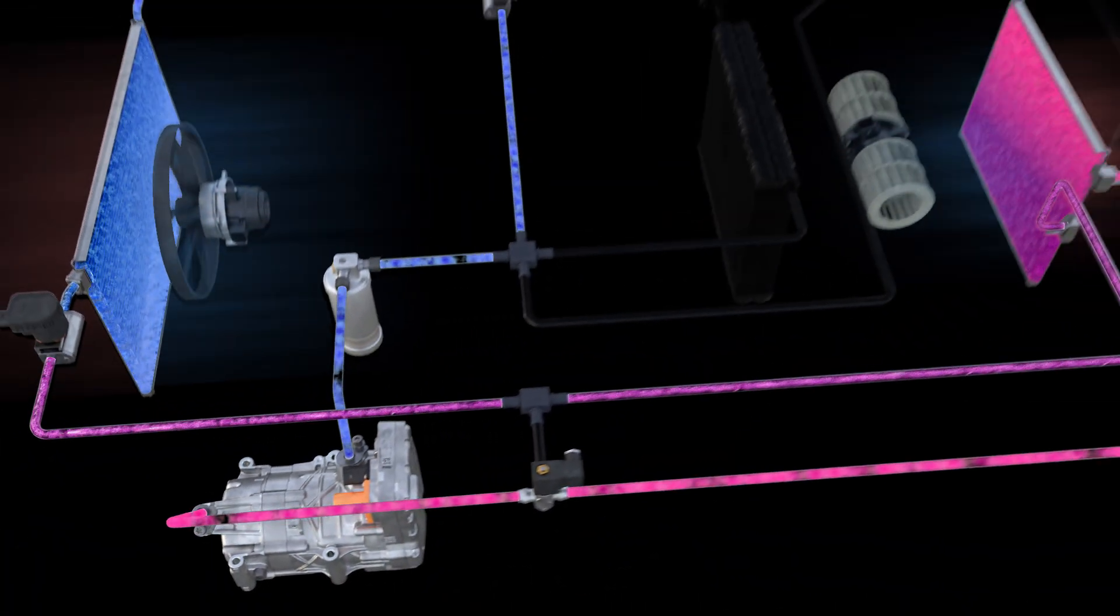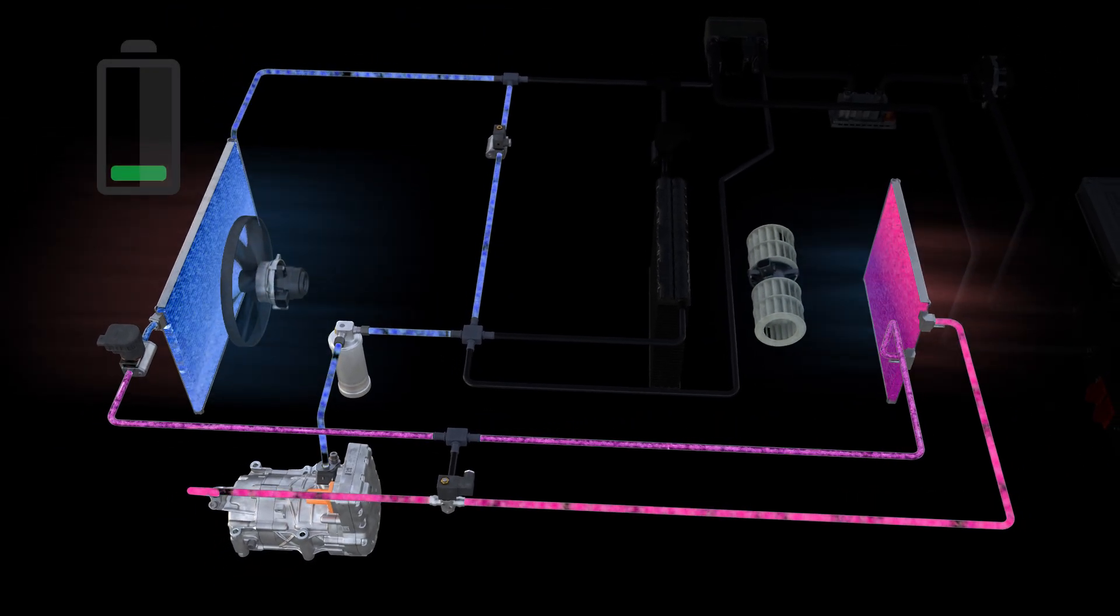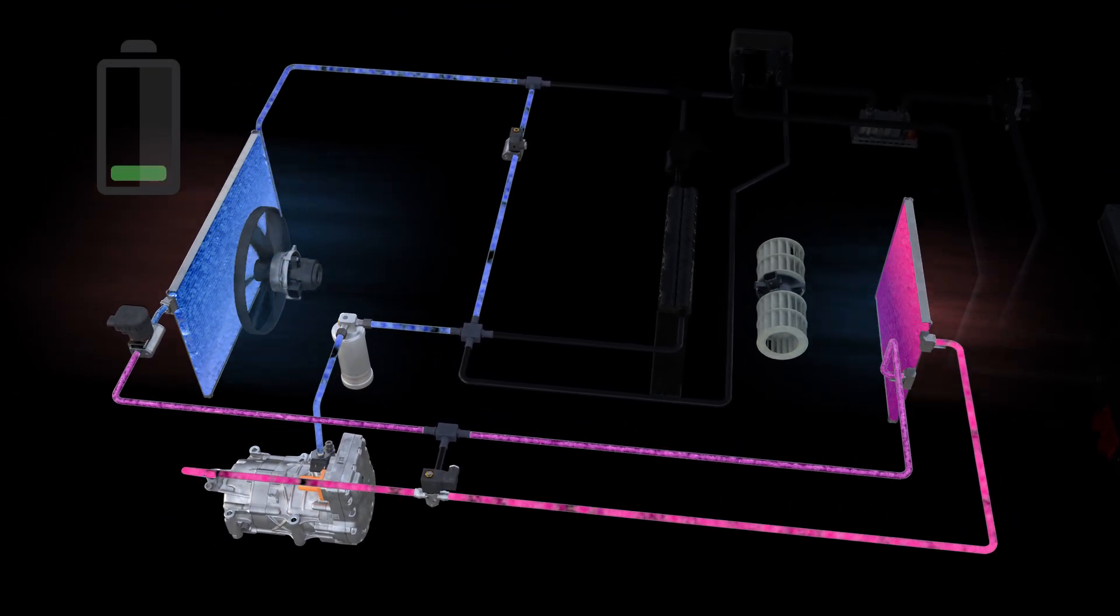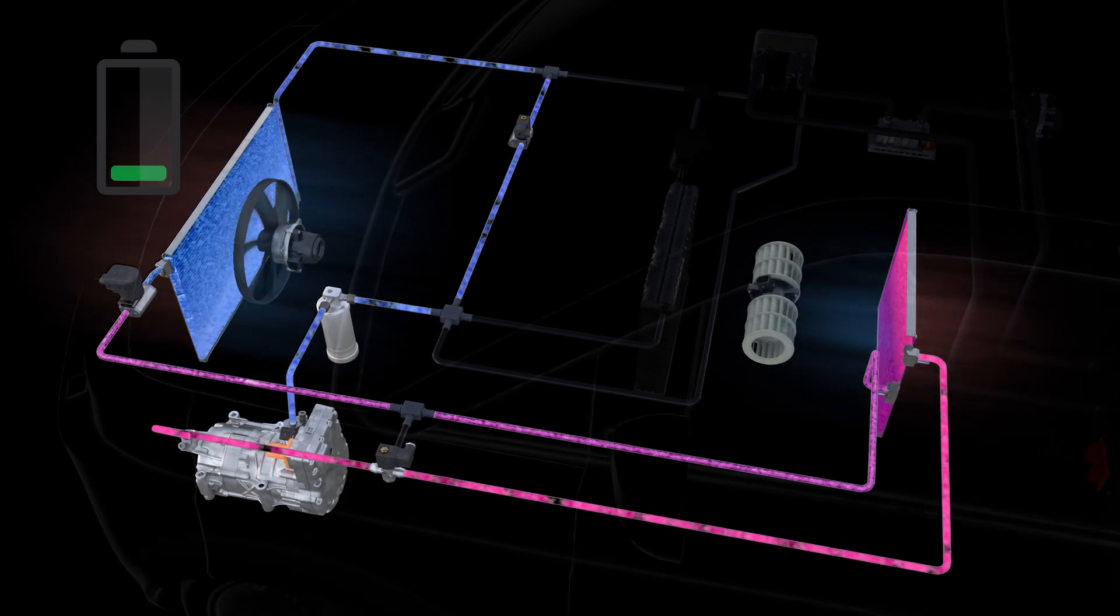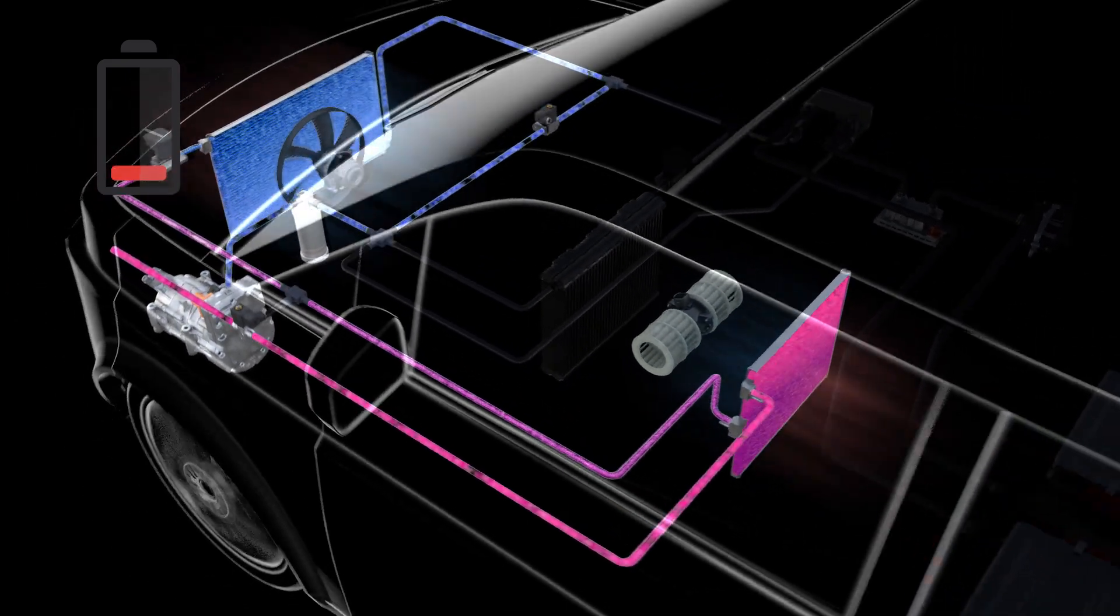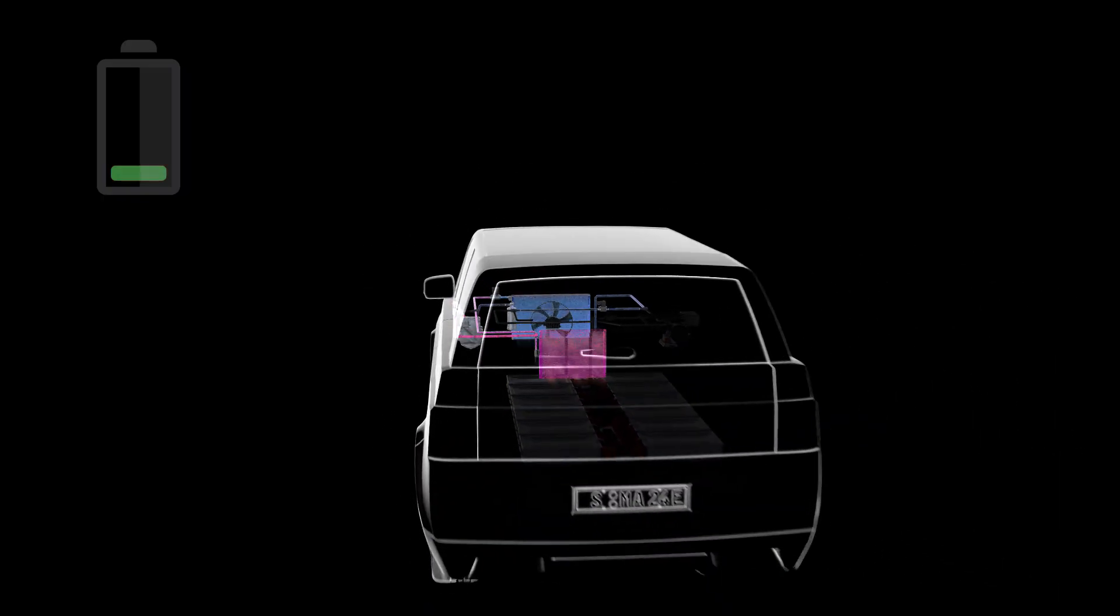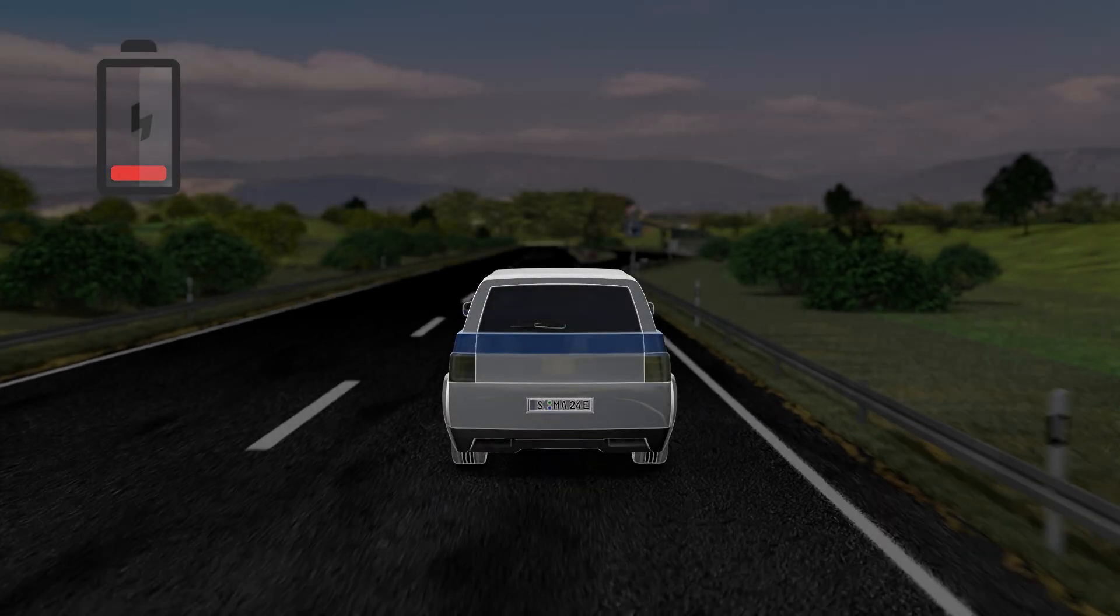The state of charge of the traction battery decreases as you drive. The main power consumer is the drive, but the air conditioning compressor, high voltage heater, and DC-DC converter also need energy from the high voltage battery.